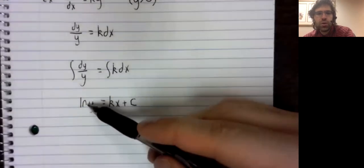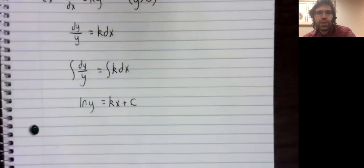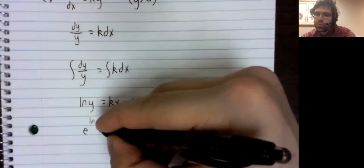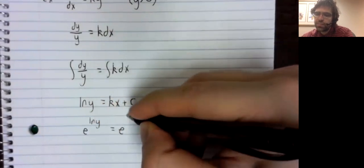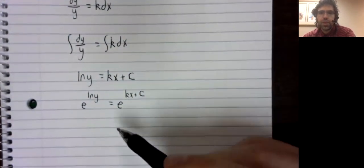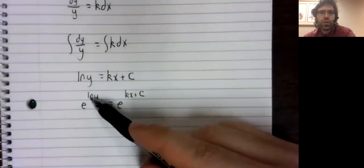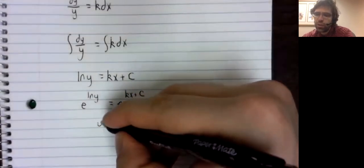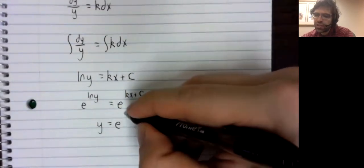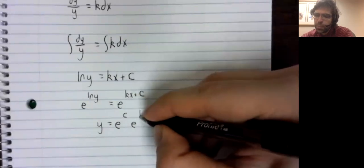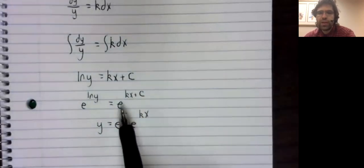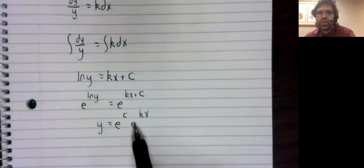Now to solve this, we will take the exponential of both sides. On the left, the exponential and the logarithm just cancel out. On the right, we could leave that as is, but it's more normal to break this single exponential into two.